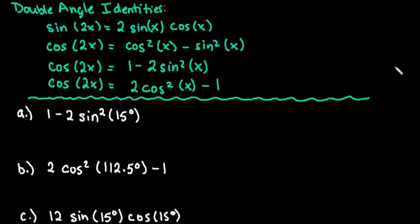So the first one that we have is 1 minus 2 sine squared of 15 degrees. So if you notice, this one does give us the second cosine 2x form. So we could really rewrite this in terms of cosine of 2 times my angle value. So in this case, my angle value is 15 degrees. And then we could simplify. So we have cosine of 30 degrees.